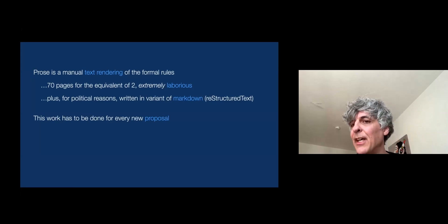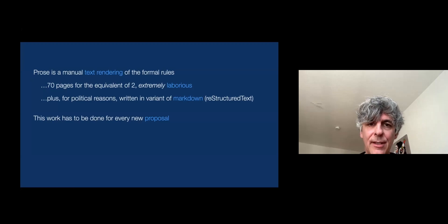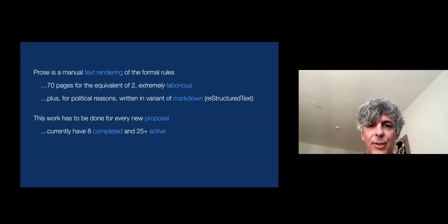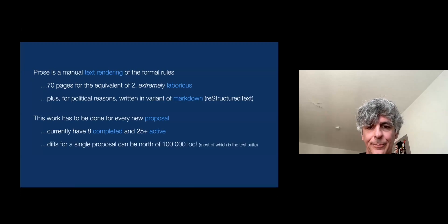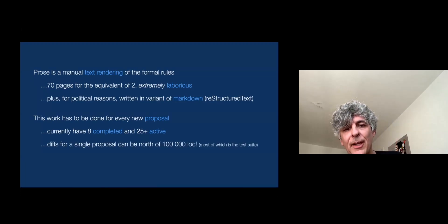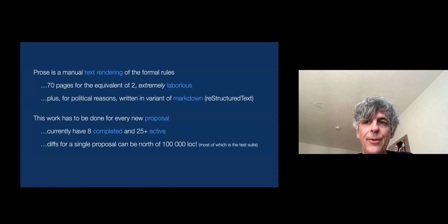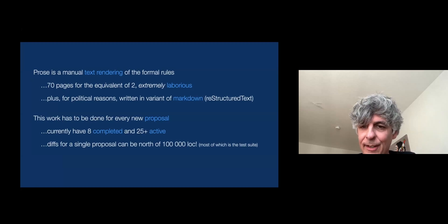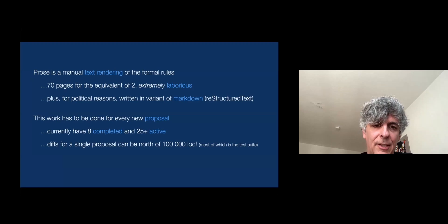This is also work that's not just done once, because we have many proposals in the making, and you basically have to face this all over again with every proposal. We have eight completed and more than 25 — probably 30 at this point — that are active work. They can be quite large. The largest one had a diff to the whole spec repo of more than 100,000 lines of changes, though most of that was test suite — roughly 20-25% was actual spec.